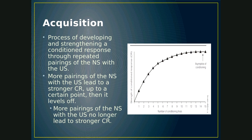After that point, your conditioned response starts to level off and continued pairings of the NS and the US will not lead to stronger responding. For example, if you have a fear of dogs because you were chased by a dog, the first time the NS of the dog and the US of being chased are paired, you will have a low level of fear. The next time you're chased, that fear will get stronger, up to a certain point, and then it maxes out.